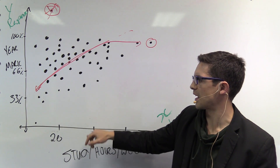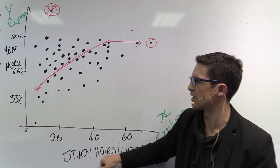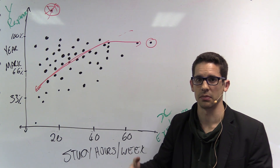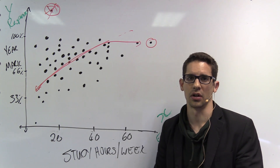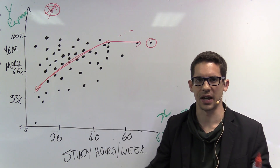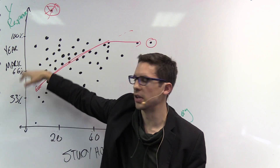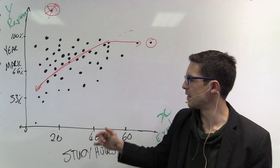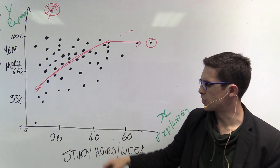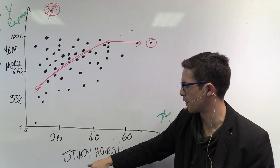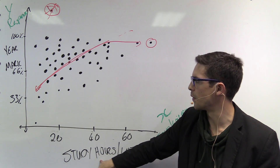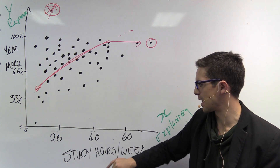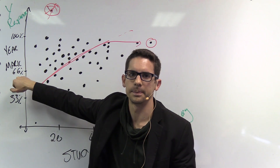The only way we can say for certain that study hours drive the final year mark is to conduct an experiment — to split students into a control group and a treatment group and compare their yearly marks. But again, this is just an observational study. All we can say is that there is a positive correlation between study hours per week and final year mark. We cannot say that one definitely drives the other.